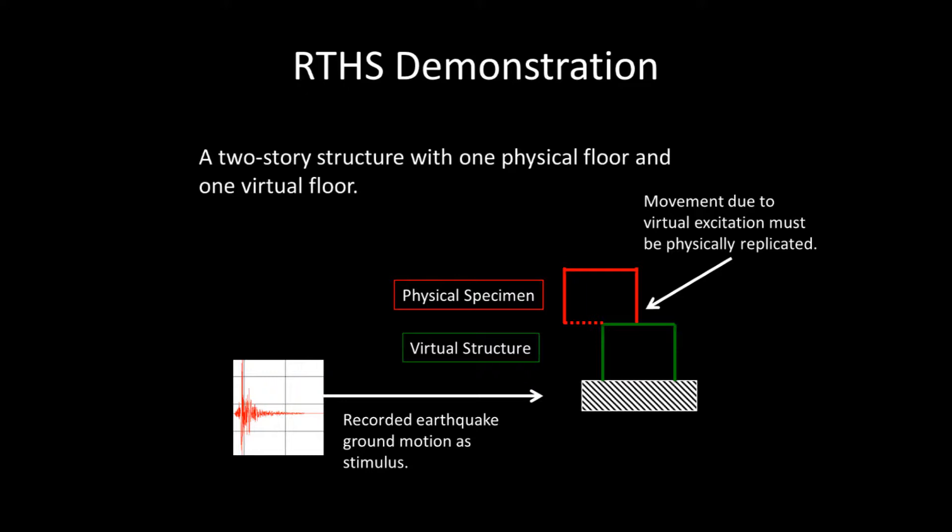This will induce a movement in the first floor deck translated through the ground floor support columns. The first floor is a scale model, so we must physically reproduce this motion. We use a sliding table, called a shake table, to produce this movement.